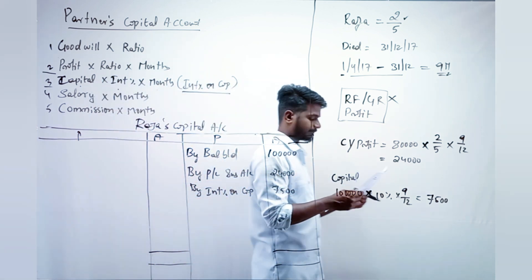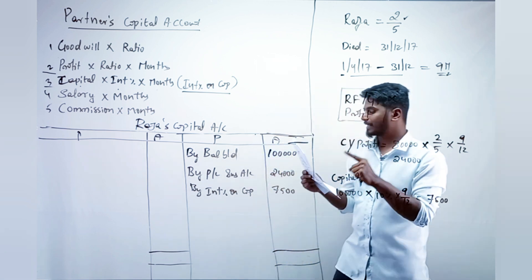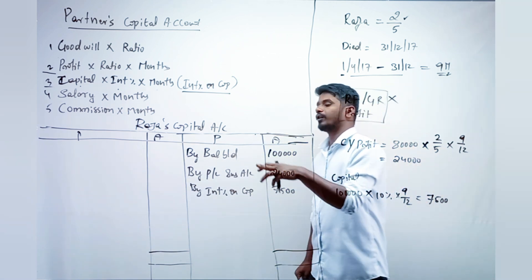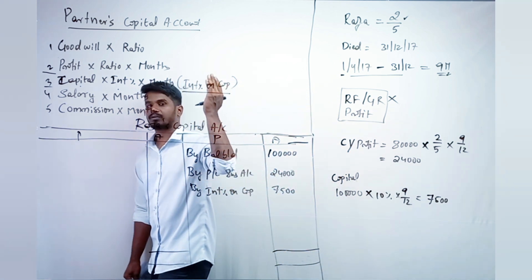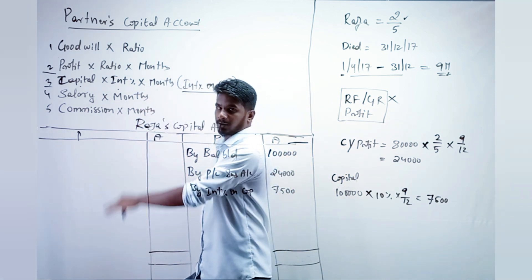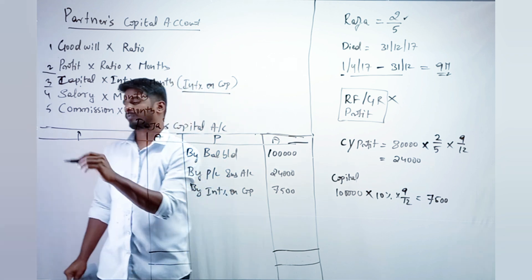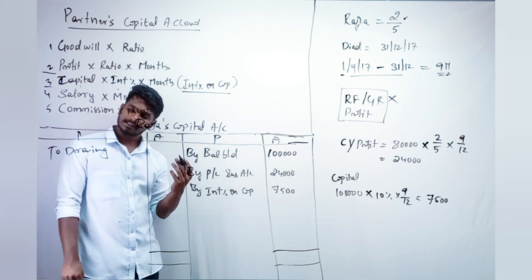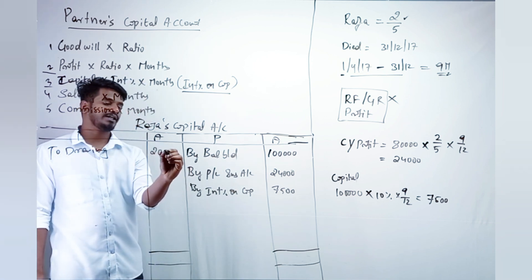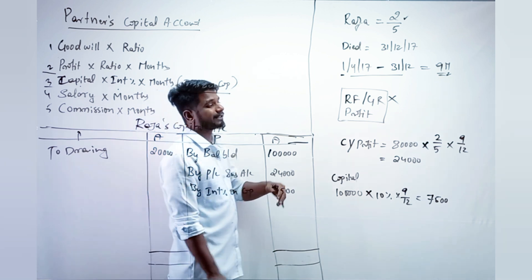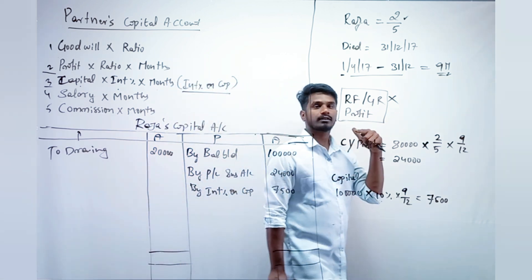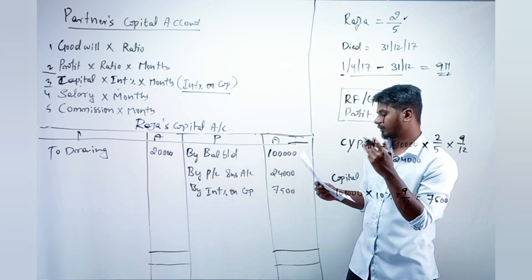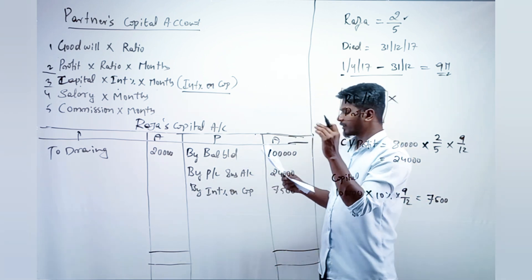Point D: drawings till death amounted to 20,000. Since we are recording capital, we record drawings on the debit side. Drawings are 20,000 — straight away we record it because it is his withdrawals, not the firm's.